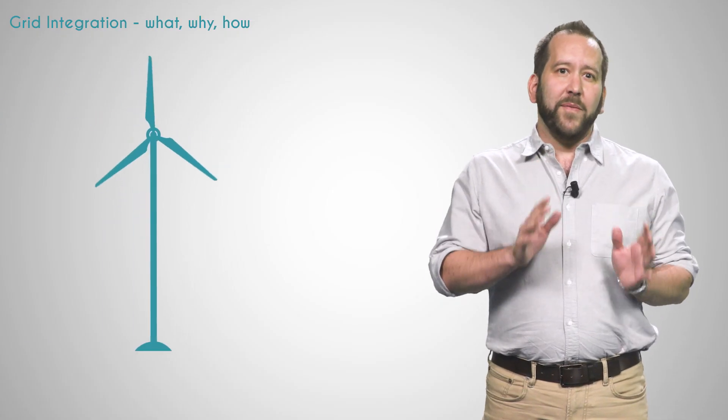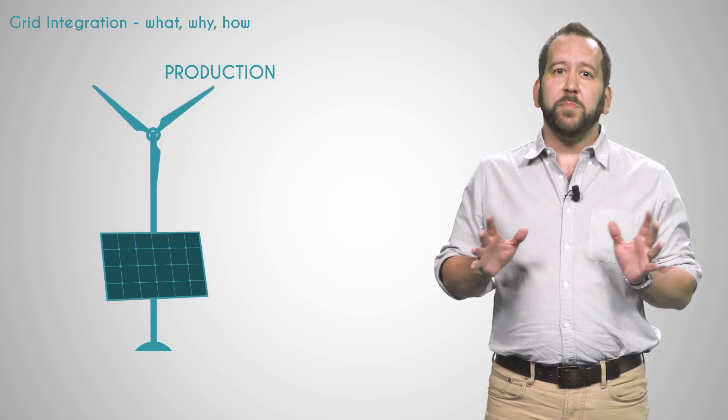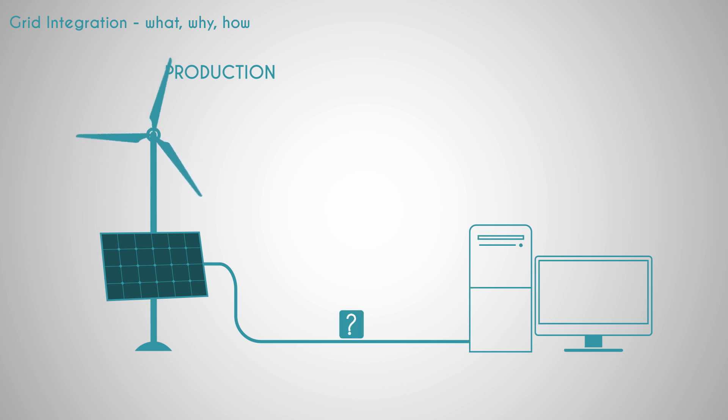While a lot of emphasis is usually put on electrical sources, producing power is by no means the end of the story. The electrical grid includes what comes between power production and power consumption, and this means much more than just a simple transmission line. Let's say that you have installed some power sources and you want to use them to power your household. Why can't you just connect the former to the latter?